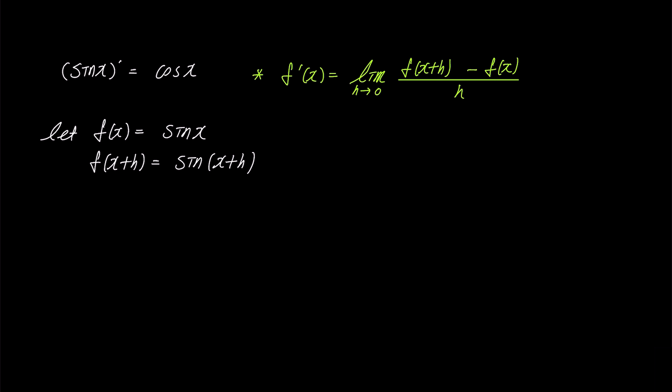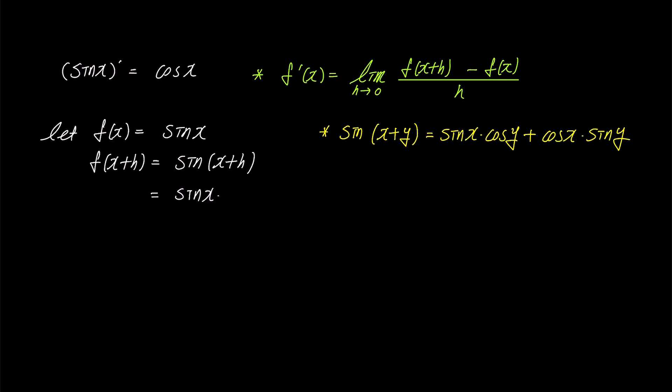To expand sine of x plus h, we need to use the compound angle formula for sine. Let's take a moment to review it. When we expand sine of x plus y, we get sine x times cosine y plus cosine x times sine y. This means that sine of x plus h can be expanded as sine x times cosine h plus cosine x times sine h.